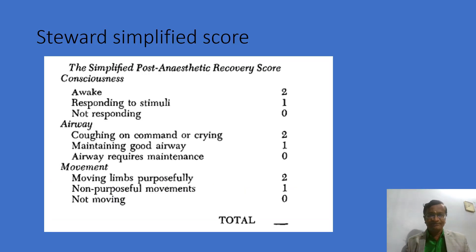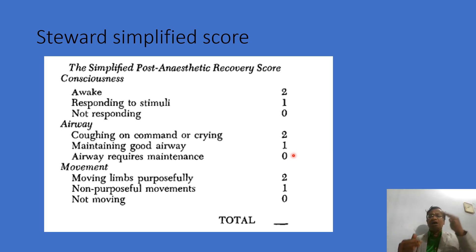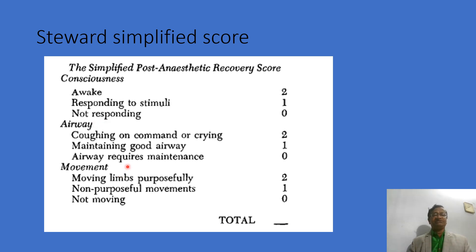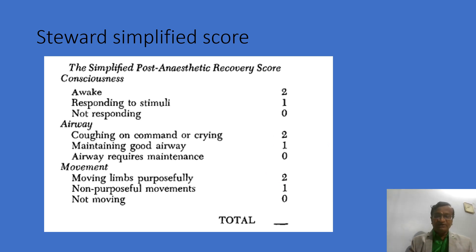There are innumerable other scoring systems. The Steve simplified score, for example, uses only Consciousness, Airway, and Movement — with a maximum of six, where five out of six is the threshold.